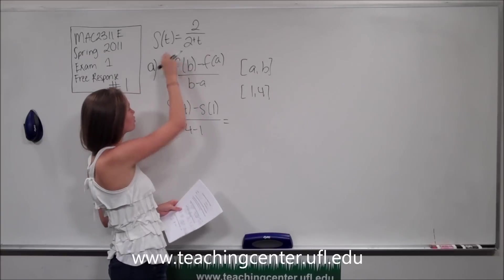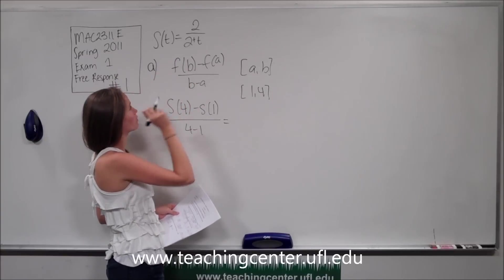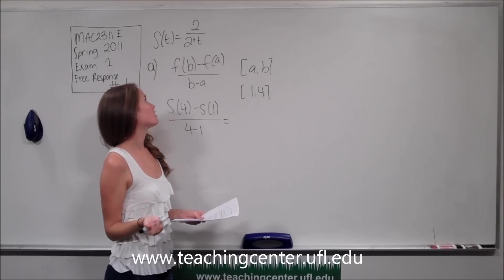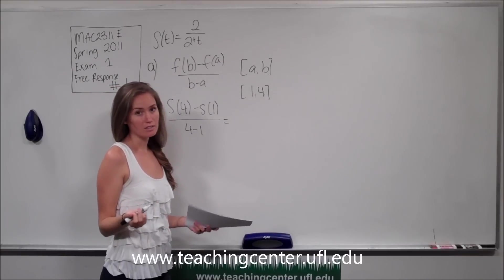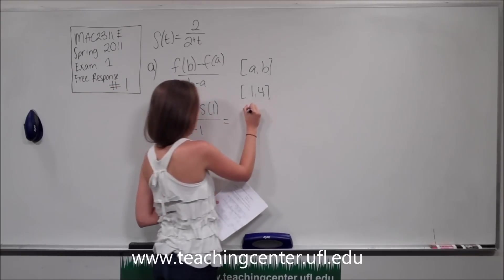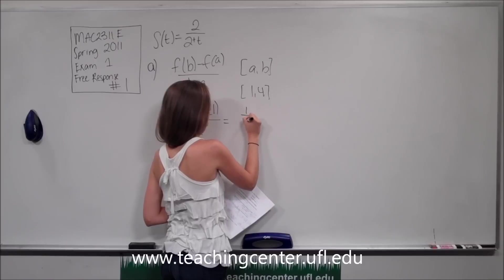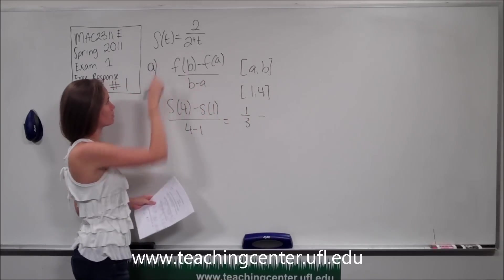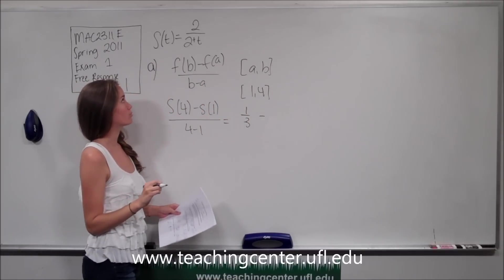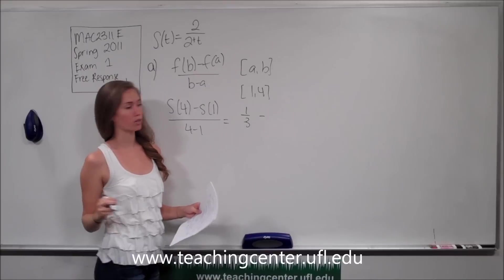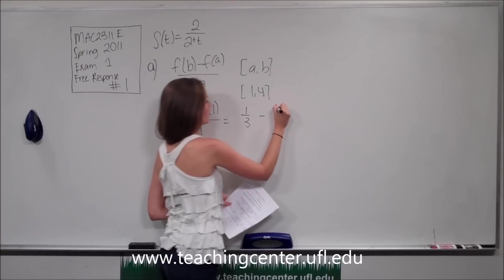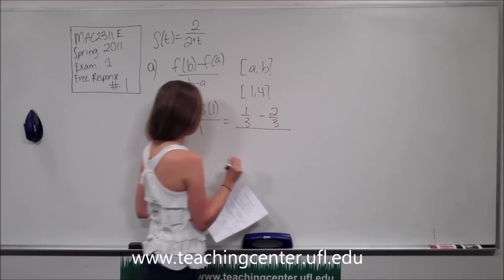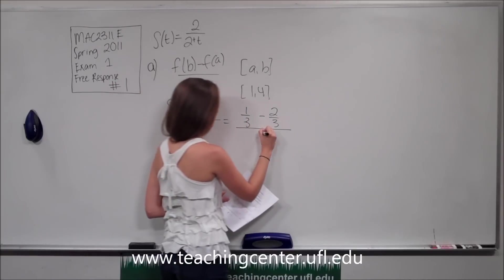If we plug in 4 into our original function we get 2 over 2 plus 4, so that's 2 over 6, and 2 over 6 simplifies down to 1 third. Minus, if we plug in 1 into our position function we get 2 over 2 plus 1, which is 2 thirds. All over 4 minus 1, which is just 3.